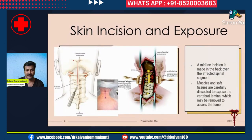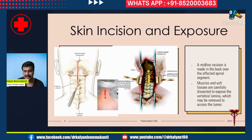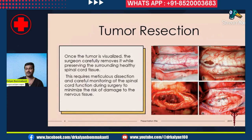The skin incision typically used is a midline incision made in the back over the affected spinal segment. This patient has a cervical spinal cord tumor, so the incision is in the midline over the back of the neck. The muscles are dissected and the vertebral lamina — you can see the intact lamina — are removed so the spinal cord with the tumor comes into picture. We then open the dura mater; you can see the dural flaps which have been cut and pulled apart.